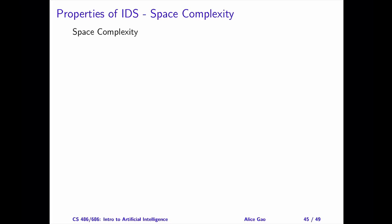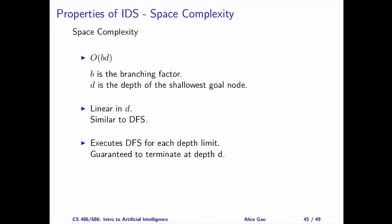Let's look at the properties of IDS: space complexity, time complexity, completeness, and optimality. For space complexity, IDS performs DFS for every depth limit. Since IDS increases the depth limit by one each time, it will terminate at depth D, where D is the depth of the shallowest goal node. The maximum length of the current path is D, and each node on the path has at most B siblings. Therefore, the space complexity is O(B × D), which is linear in D. The space complexity is similar to DFS.